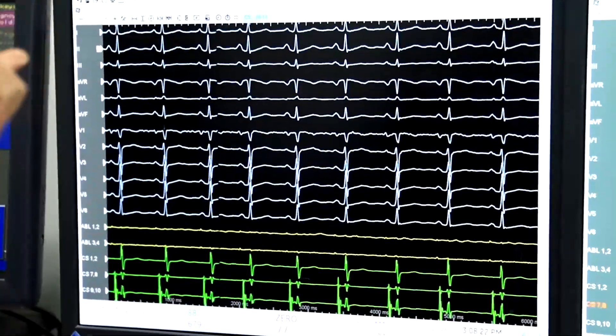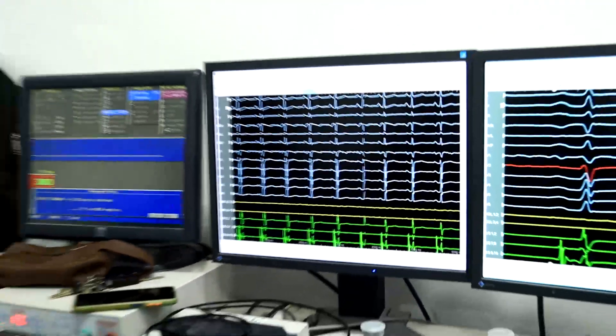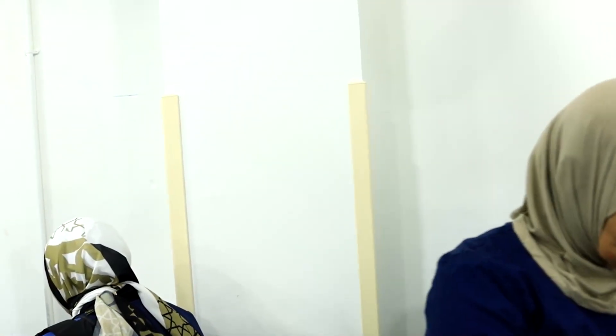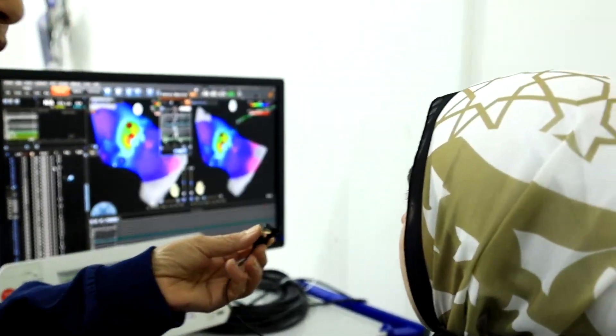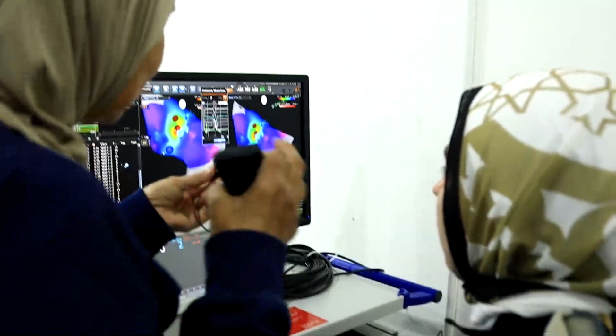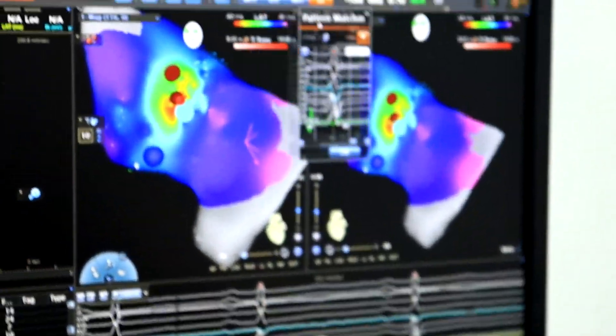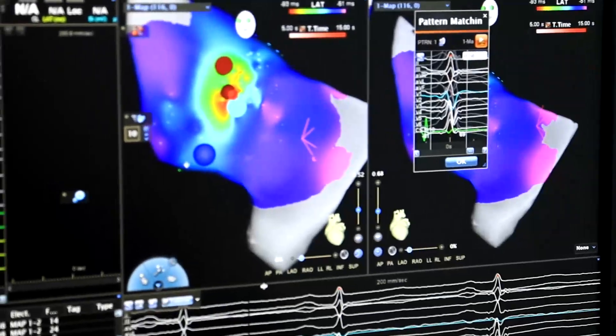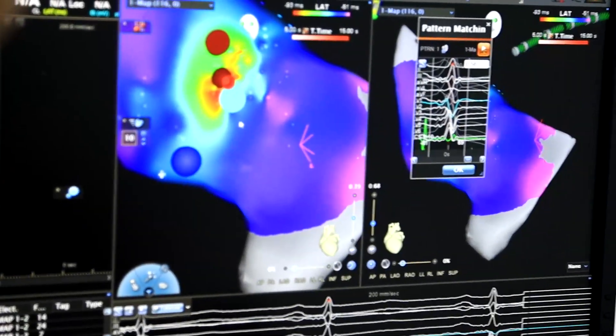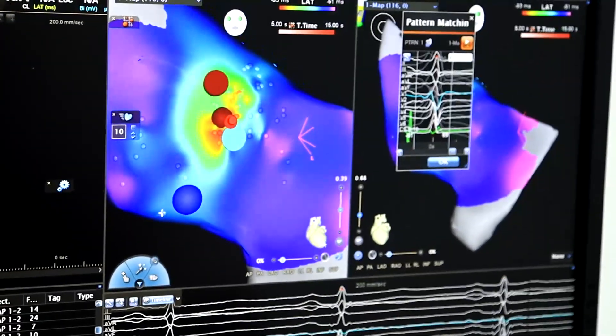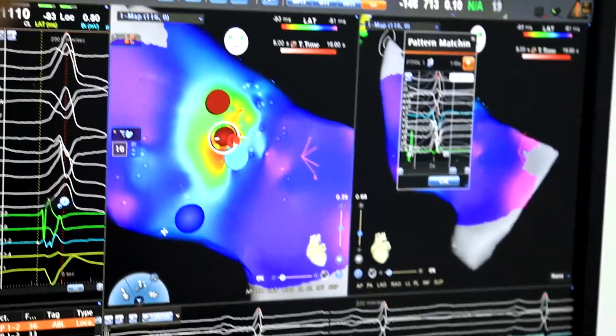Now we are live in the cath lab and we don't have any PVC after almost 20 minutes, 30 minutes follow-up. We'll see the location in the carto. Rahma, yes, we only mapped for the PVC. We did not make a whole map. We just mapped the LVOT and mainly the position was at the commissure.